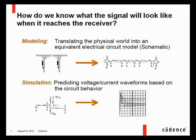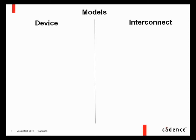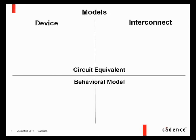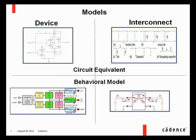The quality of your simulation is only as good as the quality of the modeling of each element, and vice versa. These two tasks go hand in hand to predict what the receiver will see. We can broadly categorize the things we're modeling as device elements and interconnect elements. Device elements include connectors, resistors, capacitors, drivers, and receiver buffer models. We have two ways of representing models: as electrical circuit equivalents, or as behavioral models that represent what type of distortion effects we'll see.